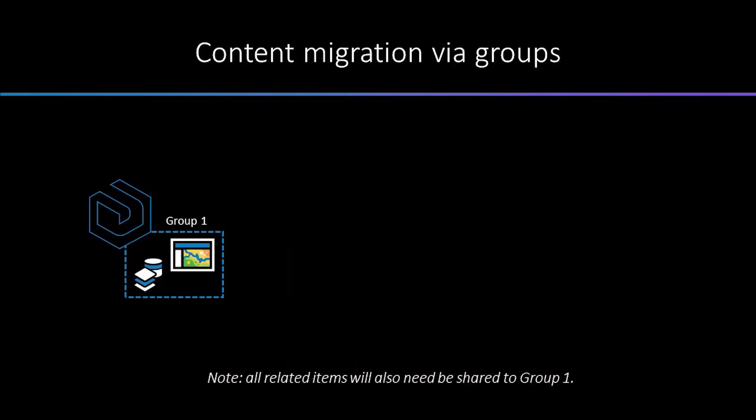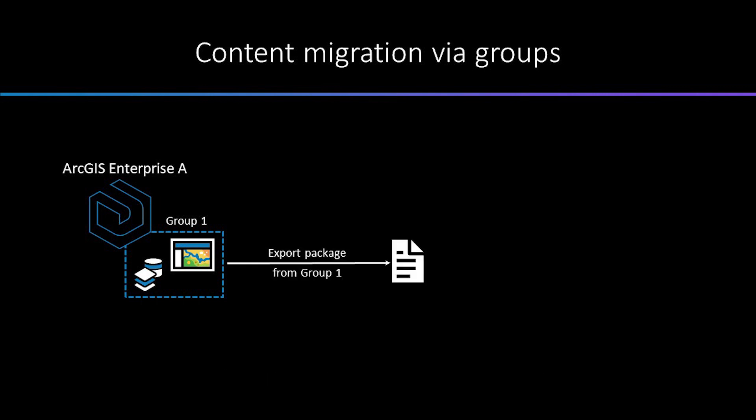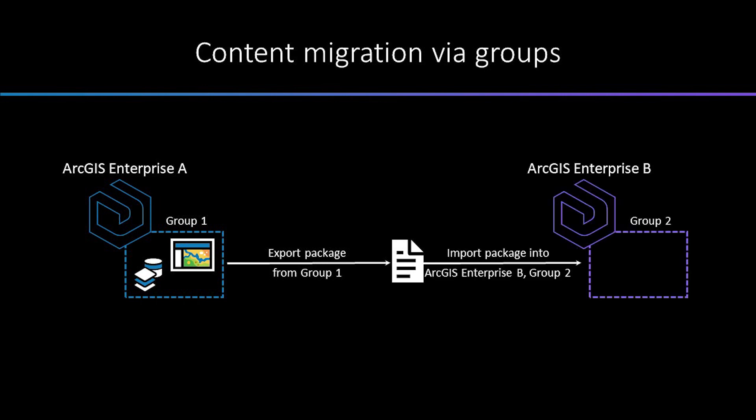Caroline is going to tell us about the ability to migrate content between ArcGIS Enterprise portals. At 10.8.1, there is a new feature to migrate content via groups. Content will need to be shared to a group in an ArcGIS Enterprise environment — let's call it ArcGIS Enterprise A. From the portal admin API, an export file can be generated. The export process considers item dependencies and attempts to include necessary items in the export package. That export file can then be imported to a second ArcGIS Enterprise environment, ArcGIS Enterprise B. The import process will maintain item ID, item dependencies, and update reference URLs to reflect the import environment's operational URL.